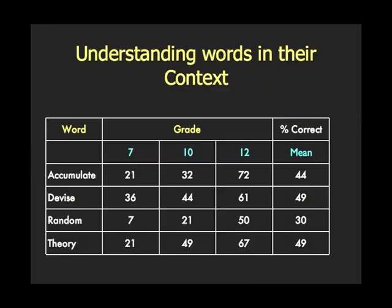Similar kinds of results occur for words like 'devise,' 'random' — pretty common words in science. The mean there is 30%, and only 50% get it right by grade 12 in terms of picking the right sentence. And 'theory' shows similar patterns.